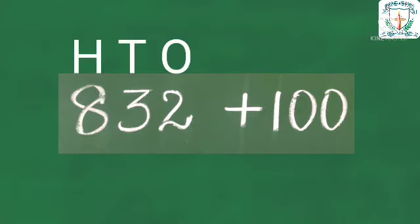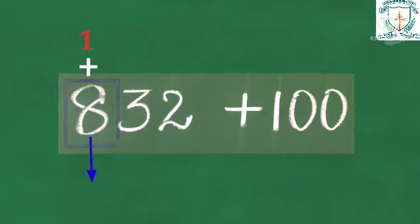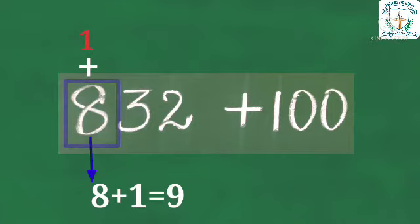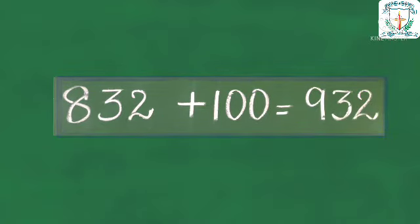832 plus 100. Here 8 is in hundreds place. Let us increase 8 by 1. That is 8 plus 1 is equal to 9. Therefore, 832 plus 100 is equal to 932.